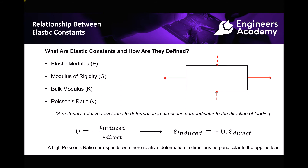Rearranging that equation to make induced strain the subject, we get induced strain equals minus the Poisson's ratio times the direct strain. The reason it's negative is because if our direct strain is causing the object to elongate, then the induced strain is going to cause the object to narrow. Therefore a positive direct strain leads to a negative induced strain. A high Poisson's ratio corresponds with more relative deformation in directions perpendicular to the applied load — if the Poisson's ratio is higher, we see a greater narrowing of that piece of material.